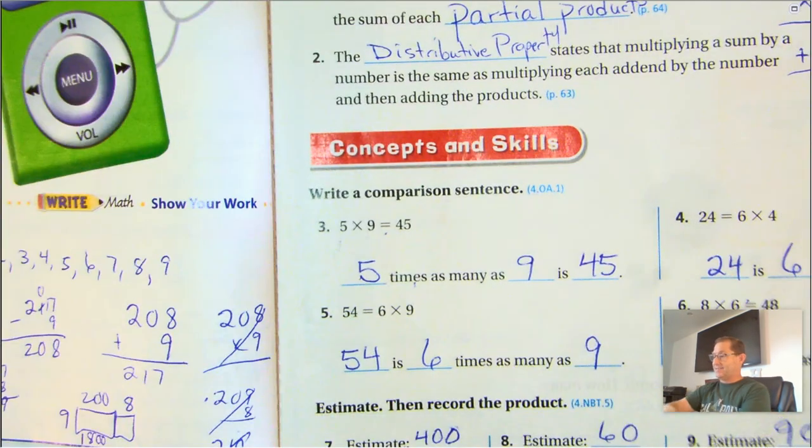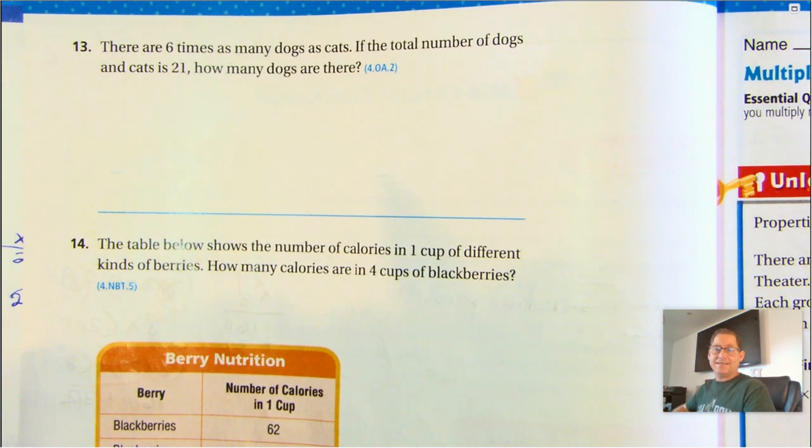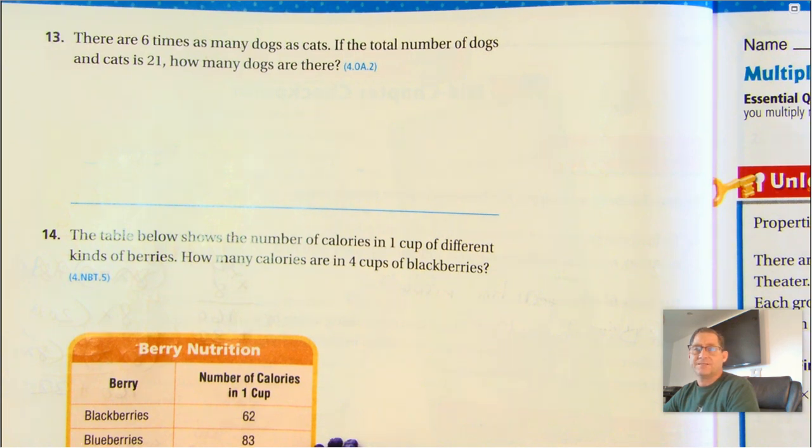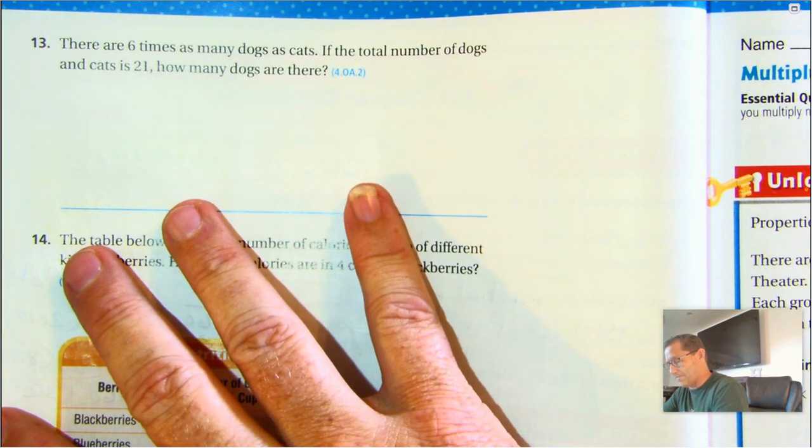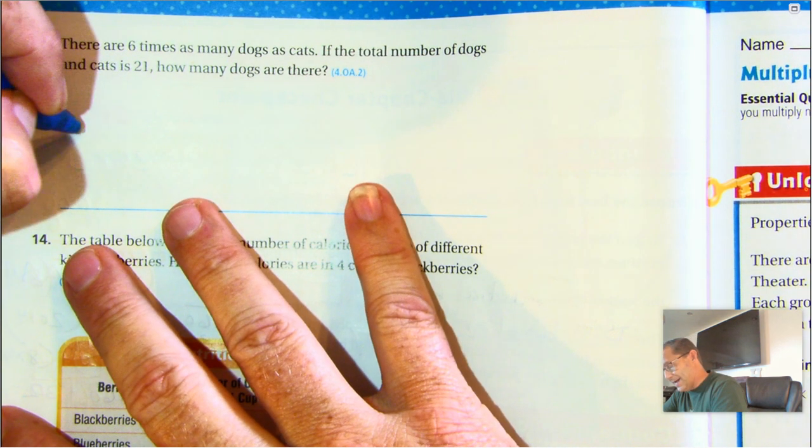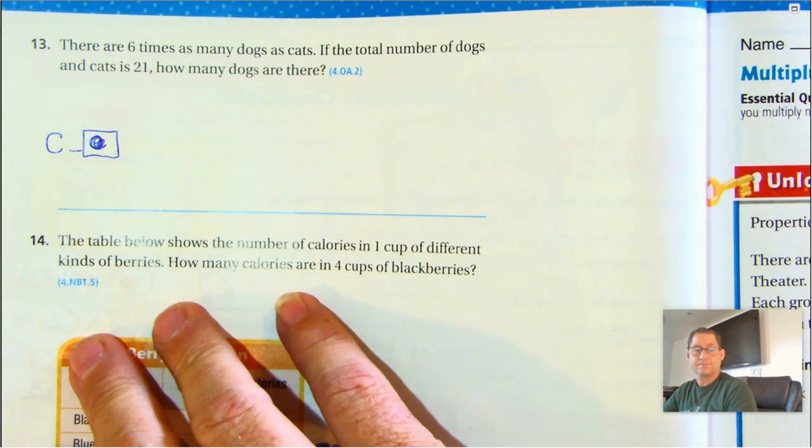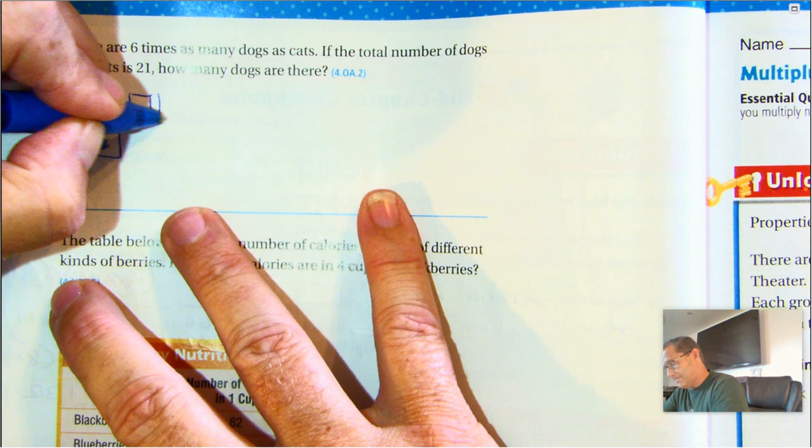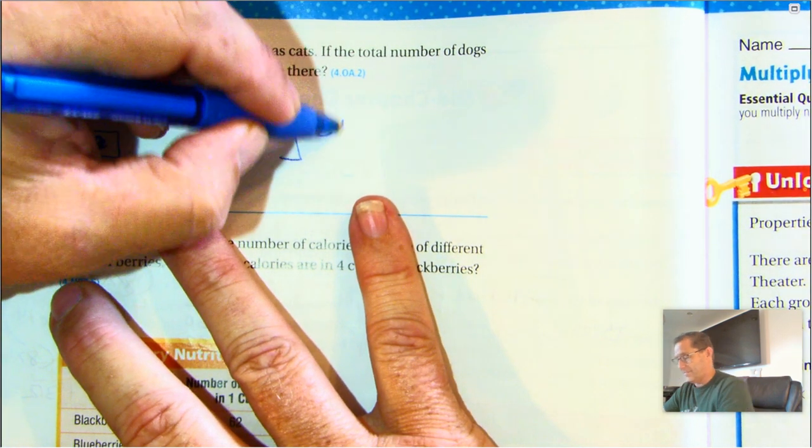Let's go on to page 76. Number 13. There are 6 times as many dogs as cats. If the total number of dogs and cats is 21, how many dogs are there? There are 6 times—okay. So this is a comparison problem, right? 6 times as many dogs as cats. So we're going to start with here and we're going to put—I'm sorry, we're going to call those cats.